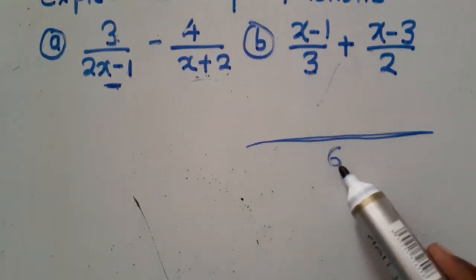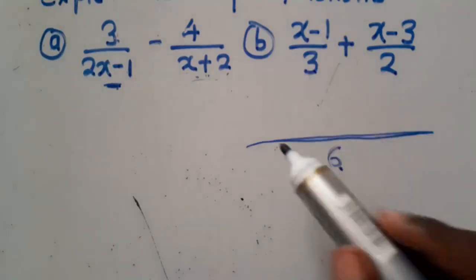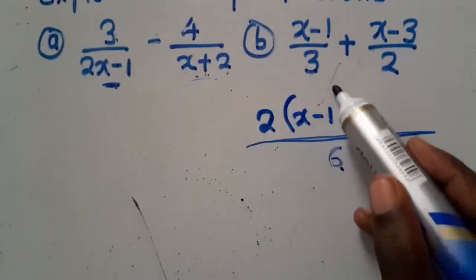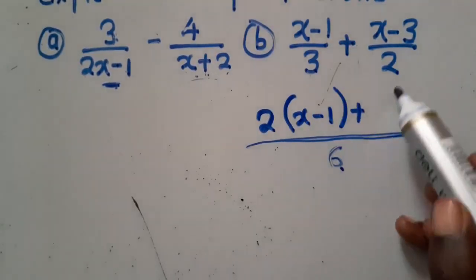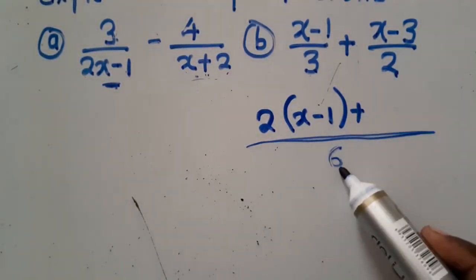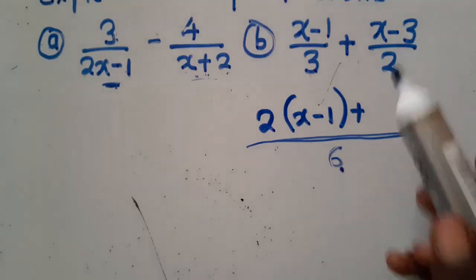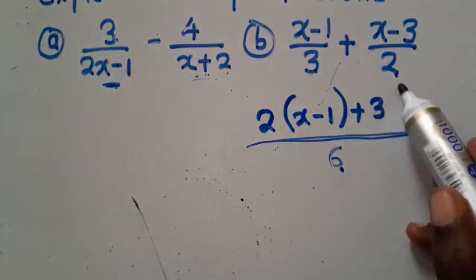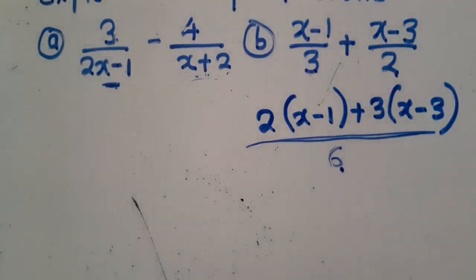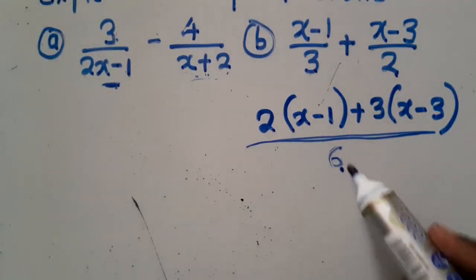So 3 into 6, it is 2. 2 times what is on top? 2 times x minus 1. You say plus. What is 2 into 6? It is 3. 3 times what is on top? 3 times x minus 3.